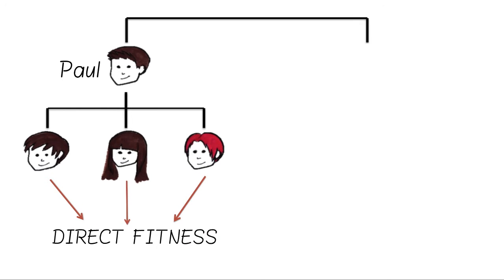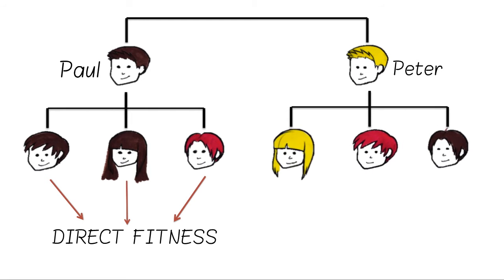But let's say Paul has a brother called Peter, and that he has three children as well. Paul can also increase his reproductive success by aiding them, as they share his genes because of his sibling relationship. If Paul aids some of Peter's children, this is called his indirect fitness.